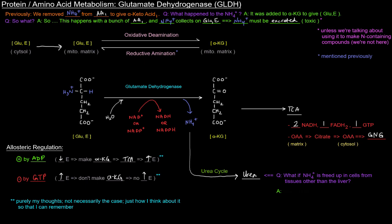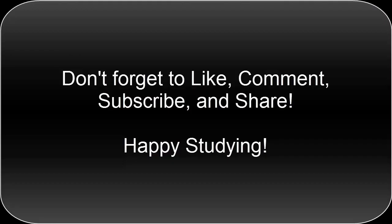That's pretty much it for glutamate dehydrogenase. Now there's a question of what if the NH4+ is freed up in cells from tissues other than the liver — because this process is happening in the liver. What if that happens in cells outside the liver? That's what we're going to talk about in the next video. I hope this video was helpful. Thank you for watching — don't forget to like, comment, subscribe, and share with friends. Thank you and happy studying.